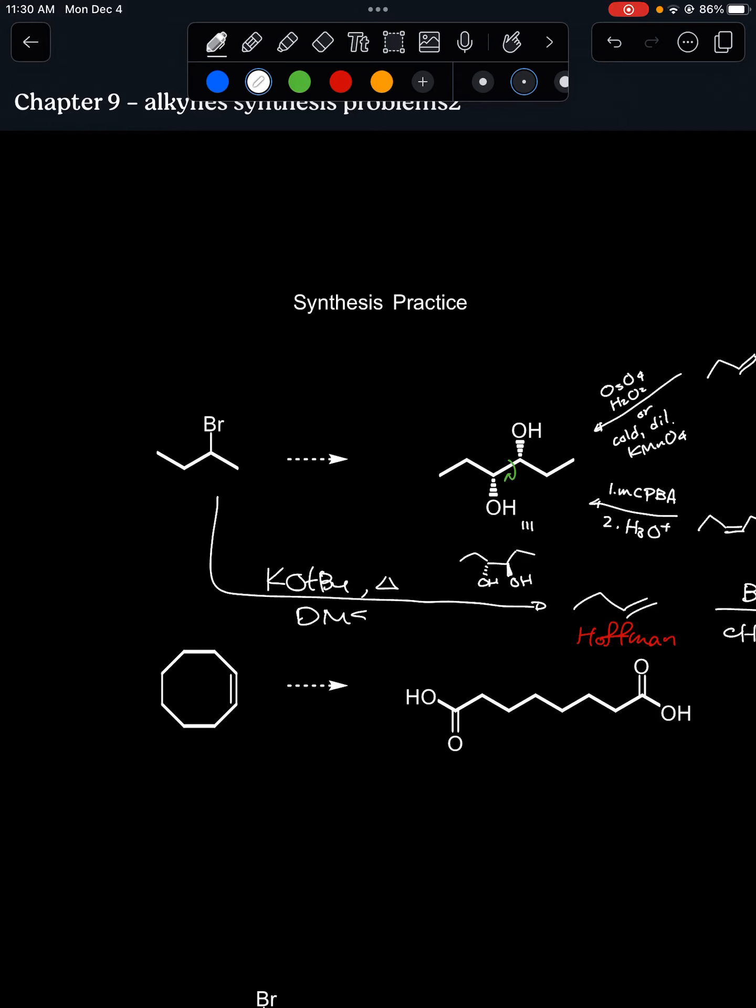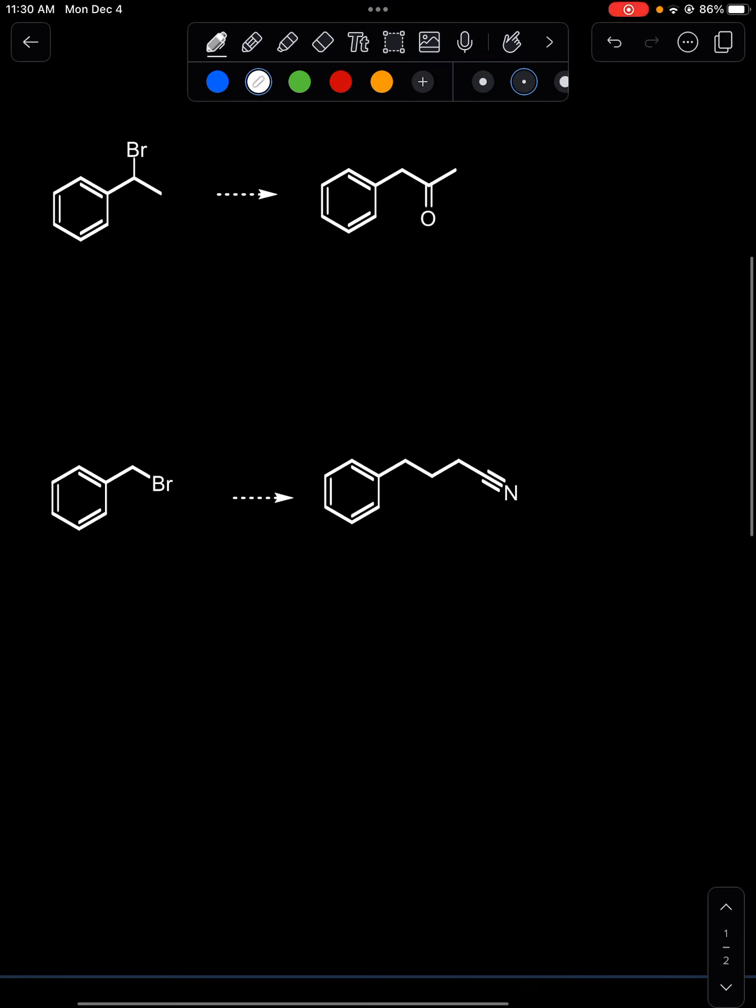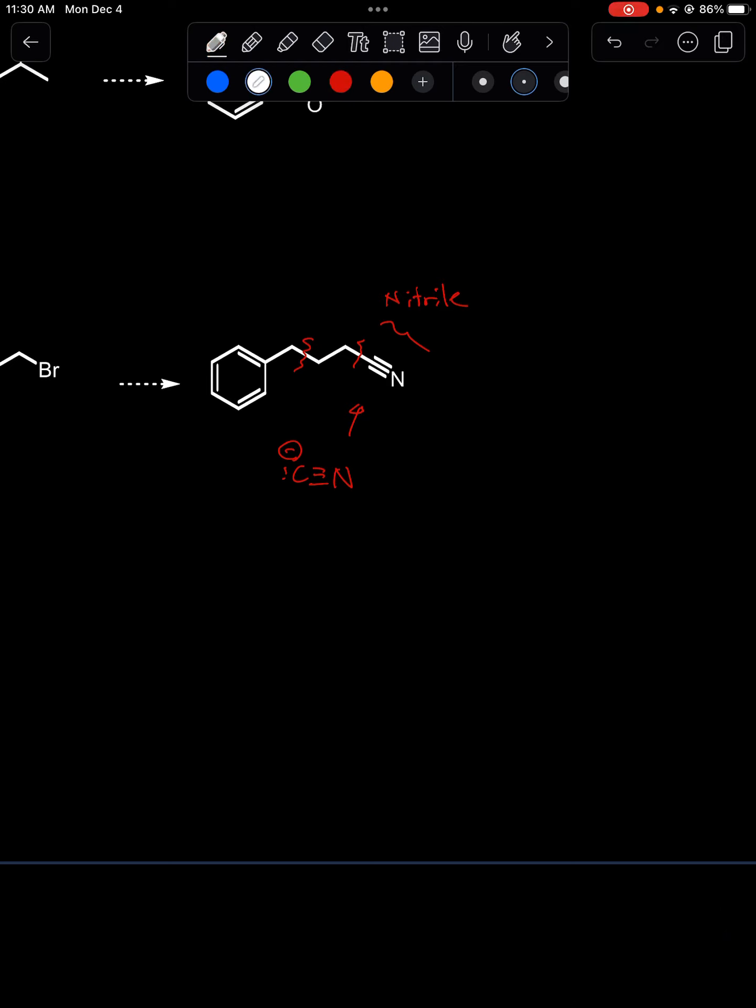Another one that we didn't go over in class is this last one. Of course we notice right off the bat that it has one two three extra carbons. One of those could come from, this is of course a nitrile functional group, but this could come from a cyanide ion which is a strong nucleophile. So this nitrile group could be introduced through an SN2 reaction because cyanide is a really strong nucleophile. So with that in mind let's think about how to synthesize this.